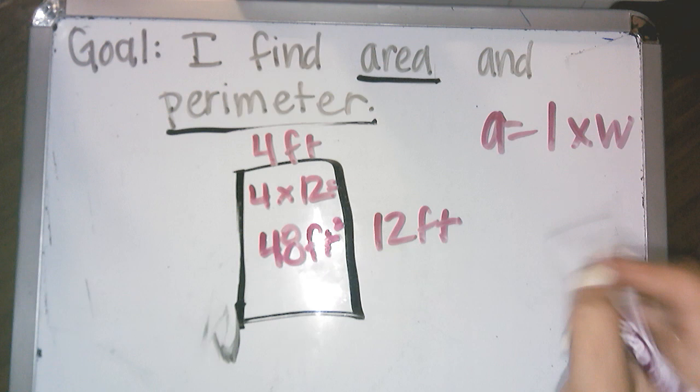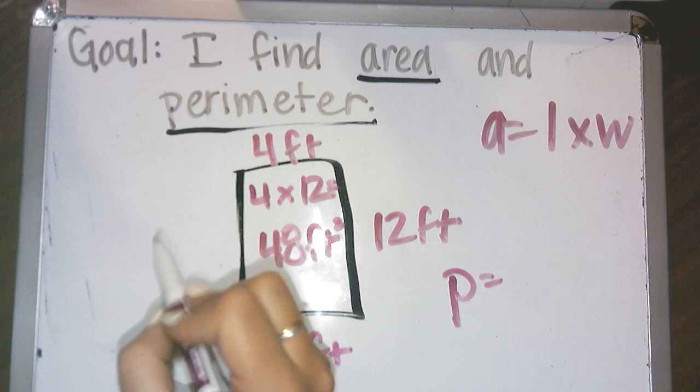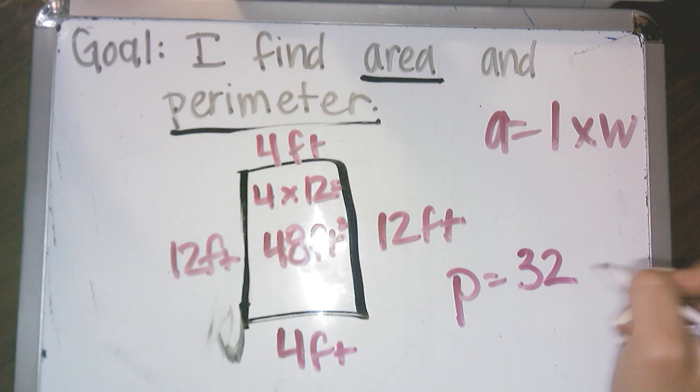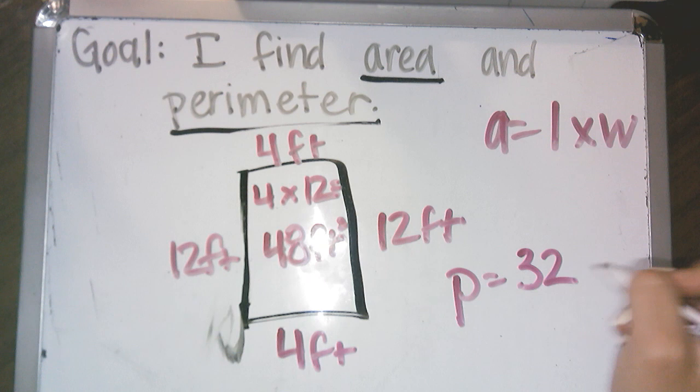And then perimeter is when you add up all the sides. So I know this is also 4 feet and this is also 12 feet. So 12 plus 12, that's 24. Plus 4 is 28. Plus 4 more is 32 feet. So my area is 48 feet. And my perimeter is 32 feet.